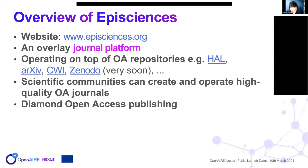The Episciences platform enables management of the entire scientific publication cycle: submission, certification, copyediting, dissemination, and preservation. It is both Gold Open Access, because journal content is available in open access, and Green Open Access, because content is already self-archived in an open repository. We can also call it Diamond Open Access because there are no reader fees, no paywall, no author fees, no APCs, and even no fees for journals to use the platform.